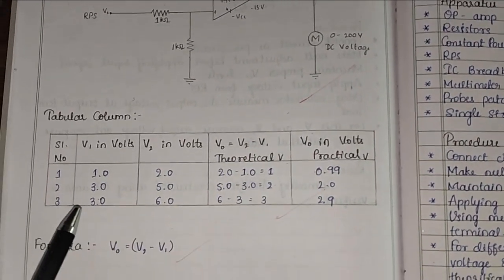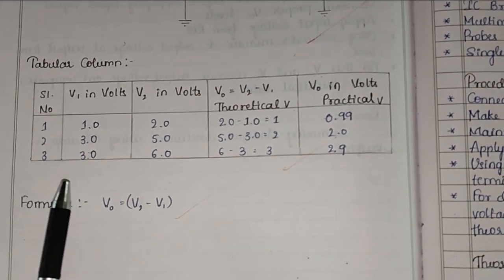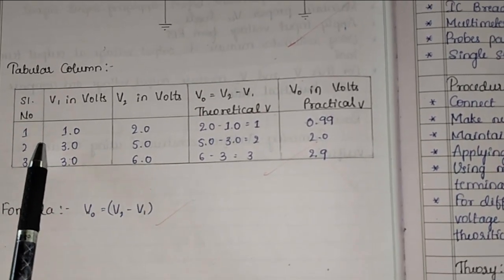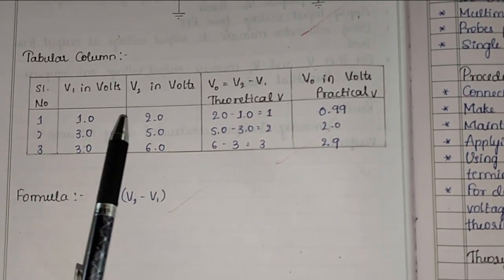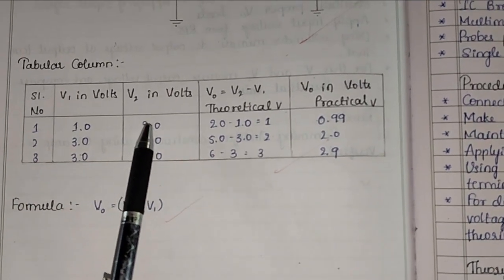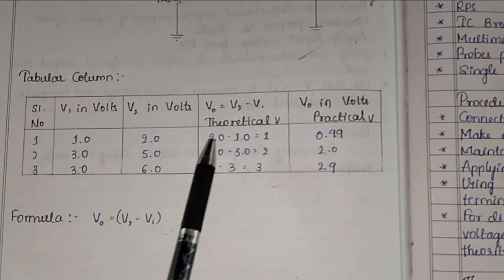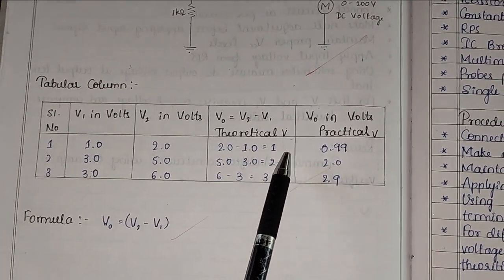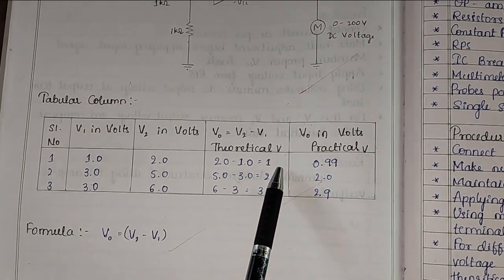For instance, in this tabular column we can observe that we have already taken few readings. Here I have given V1 as 1 volt, V2 as 2 volts. Then from this formula, theoretical reading must be 1 volt and practical reading also is approximately equal to 1 volt.